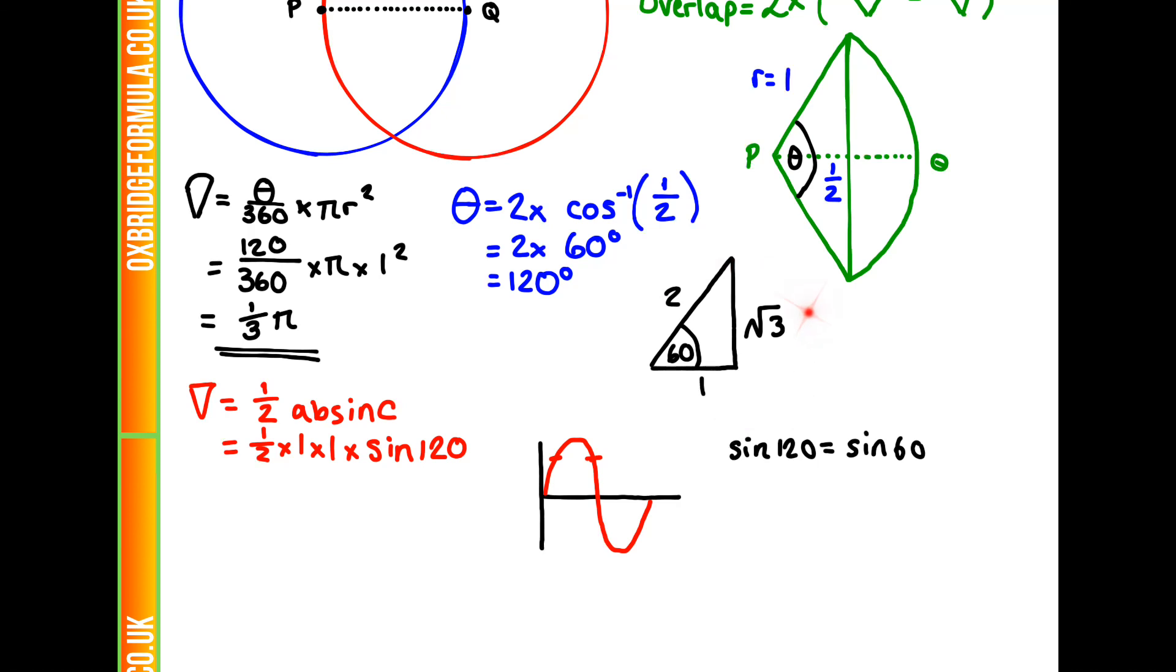And from that, we can work out using our table here, that sine of 60 is root 3 over 2. So we've got a half times root 3 over 2, or root 3 over 4. So that is our triangle.